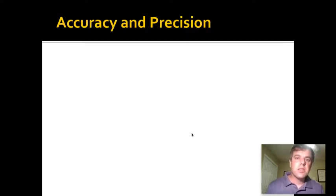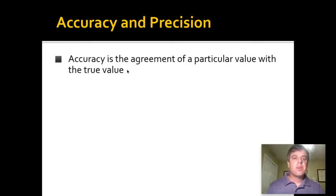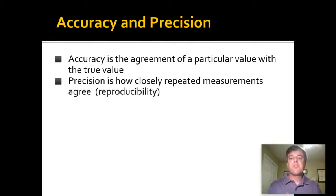The next thing we're going to talk about is accuracy and precision. Accuracy is the agreement of a measurement or a particular value with the true value. For instance, if I take a one kilogram calibrated weight and I put it on a scale and it says that it weighs one kilogram, that scale is accurate. If it says it weighs two kilograms, it's not accurate. Precision is getting the same answer over and over again.